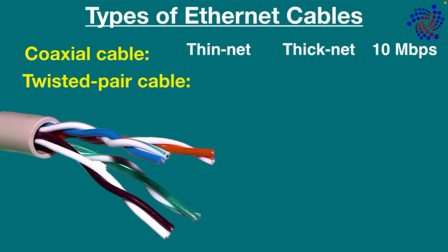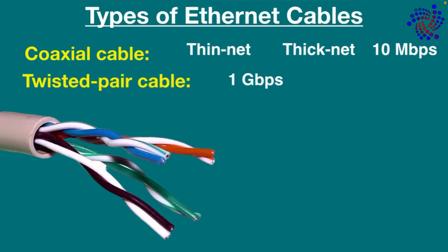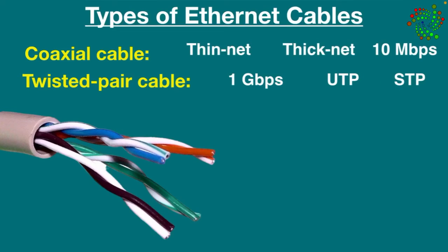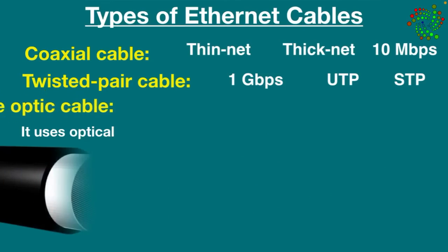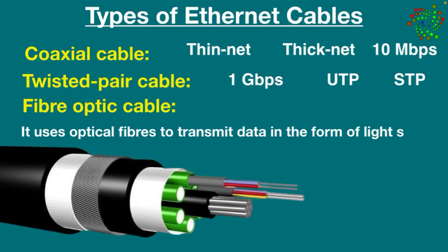Twisted pair cable has four pairs of wires twisted around each other to reduce crosstalk and outside interference. It provides up to 1 gigabit per second transmission speeds. This type of cabling is common in current local area networks and can be used for telephone and network cabling. It comes in two versions: Unshielded Twisted Pair (UTP) and Shielded Twisted Pair (STP). The difference is that STP has an additional layer of insulation that protects data from outside interference.